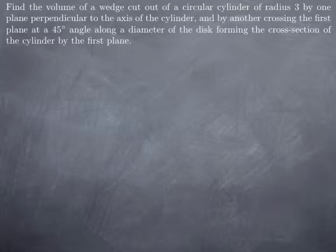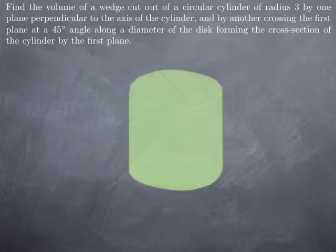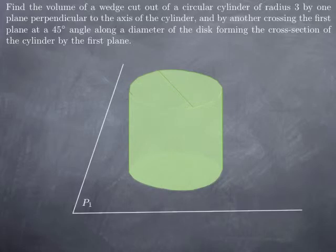That sounds complicated. Well, let's try to see what that means. There is a cylinder, let's say of radius 3, and the first plane is perpendicular to the axis of the cylinder, so let's call that P1. And this plane P1 is going to cut the cylinder along a disc, that is the disc that we see at the bottom.